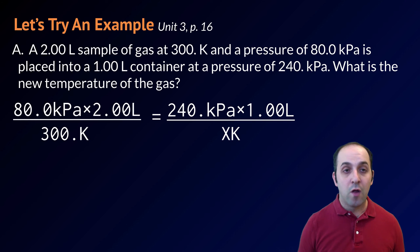Let's plug in our values. P1 times V1 over T1 is equal to P2 times V2 over T2. In this case, T2 is by itself.